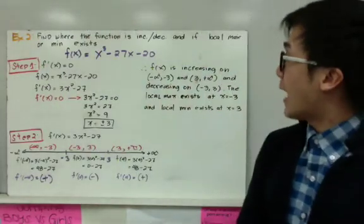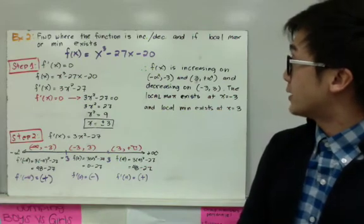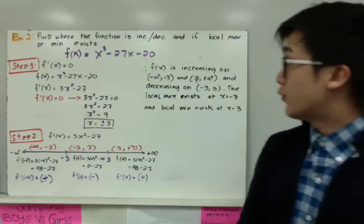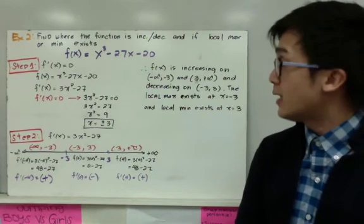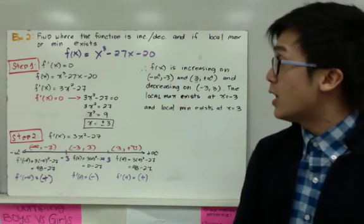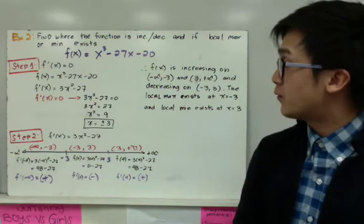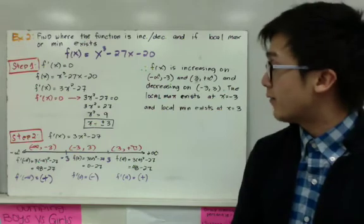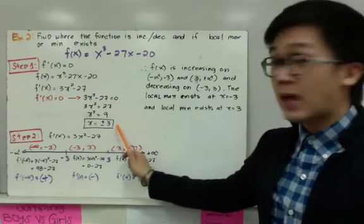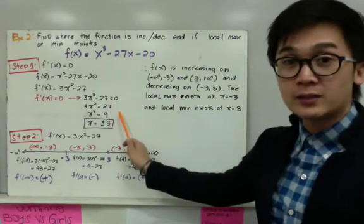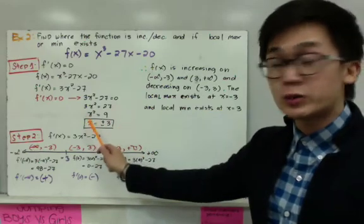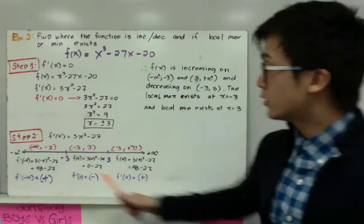For the second example, we find whether the function is increasing or decreasing and locate the local maximum or minimum. The function is x cubed minus 27x minus 20. Step 1 is finding the critical numbers by setting f prime of x equal to zero. The first derivative is 3x squared minus 27. Setting it to zero gives x squared equal to 9, and taking the square root gives x equal to positive or negative 3. These two critical numbers will partition the sign chart.